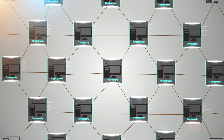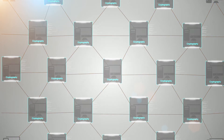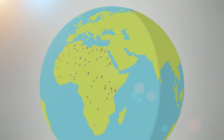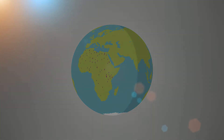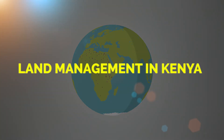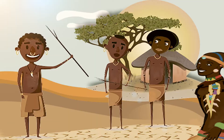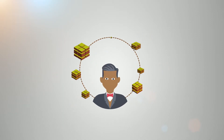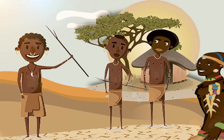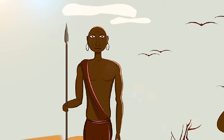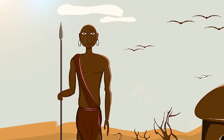To get a better understanding of this concept, let's look at how land ownership was managed in Kenya for the last 100 years across three different timelines: pre-colonial, post-colonial, and the blockchain era. During the pre-colonial era, our forefathers relied heavily on their memory of past events regarding land matters.